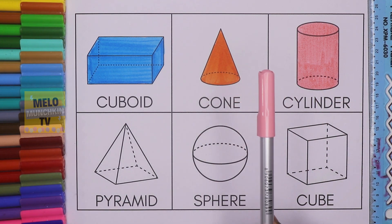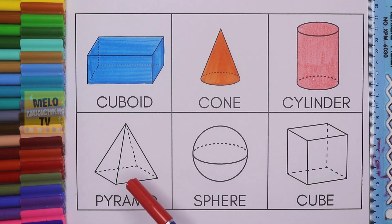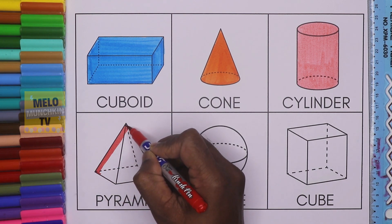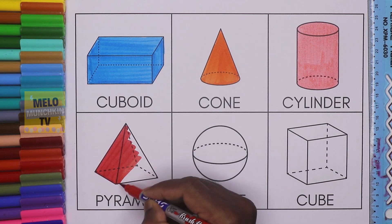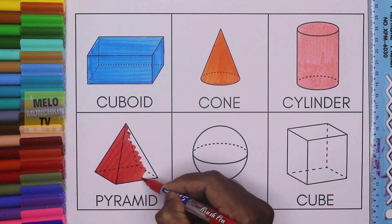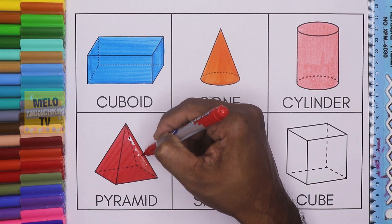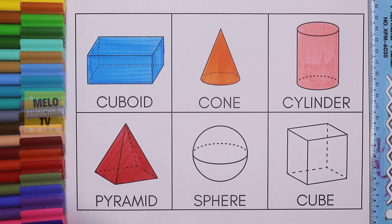Next I'll take red color to color the pyramid. This shape is called pyramid. P-Y-R-A-M-I-D, pyramid. And this color is red.